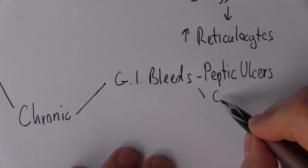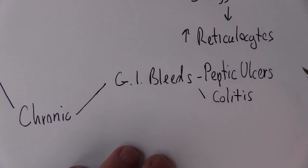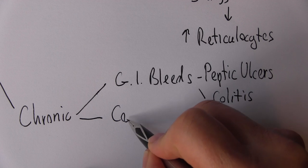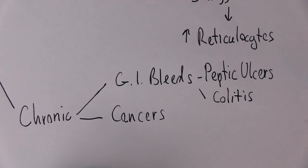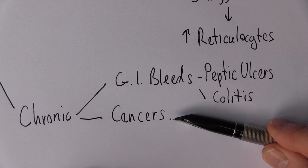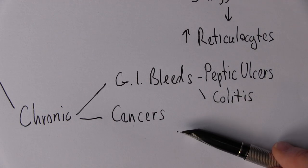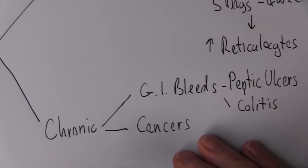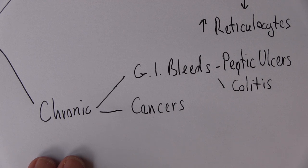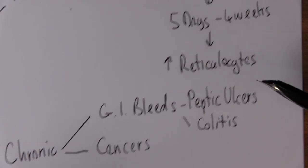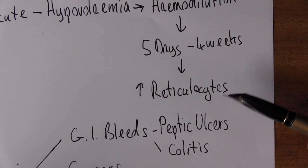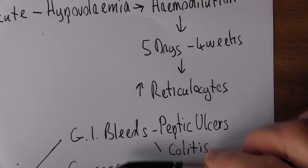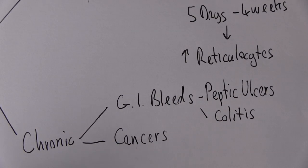Or you might think of anything causing colitis, ulcerative colitis for example. Cancers, gastrointestinal cancers particularly, colon cancers. But other cancers can bleed small amounts of blood over a long period of time, resulting in chronic blood loss anemia. Again, if we test the blood for reticulocytes, these young immature red cells, these will be increased because the bone marrow is trying to compensate for the hemorrhagic loss.